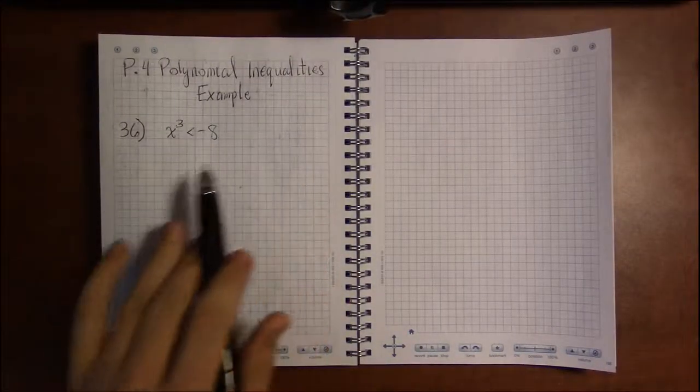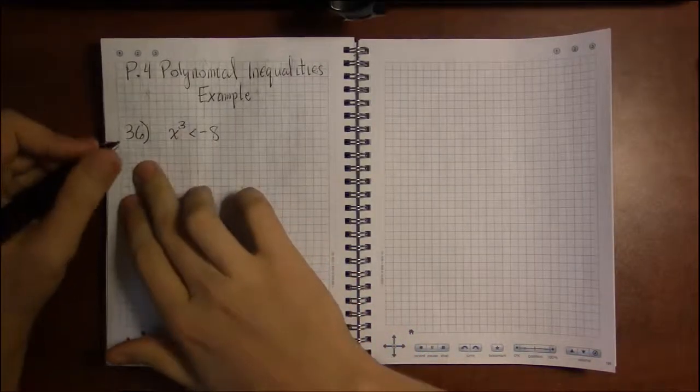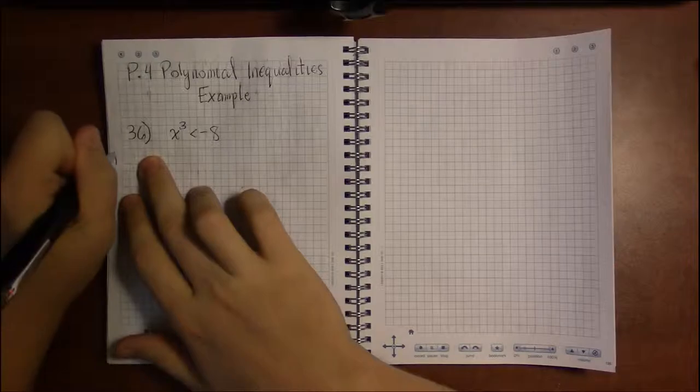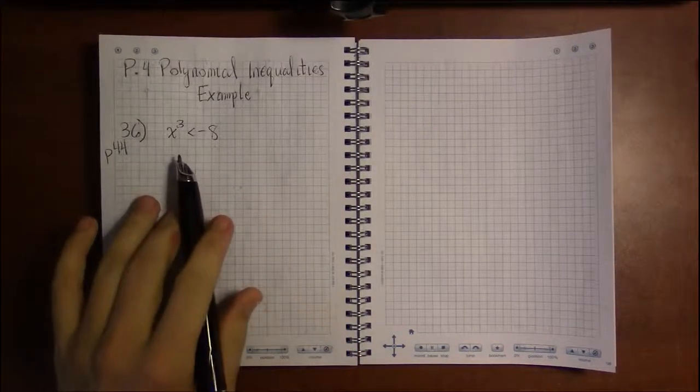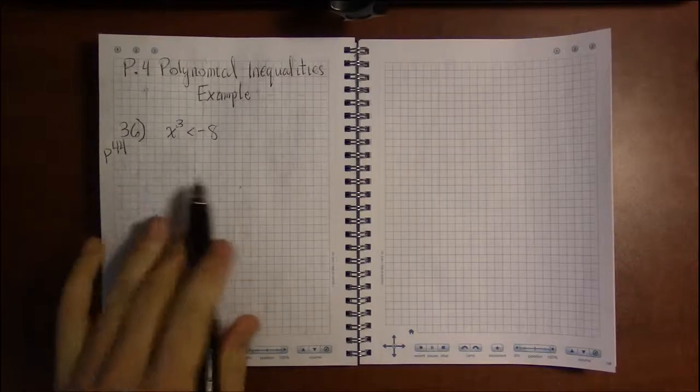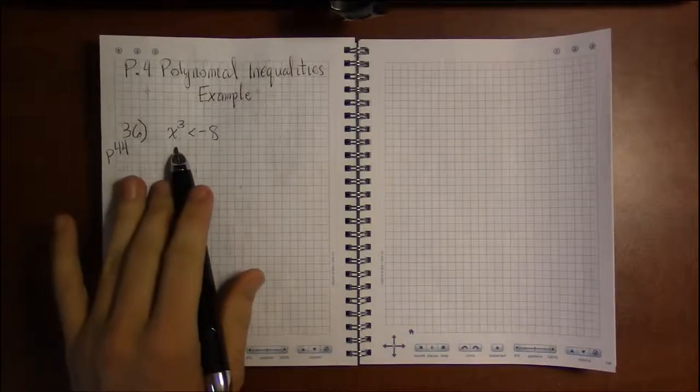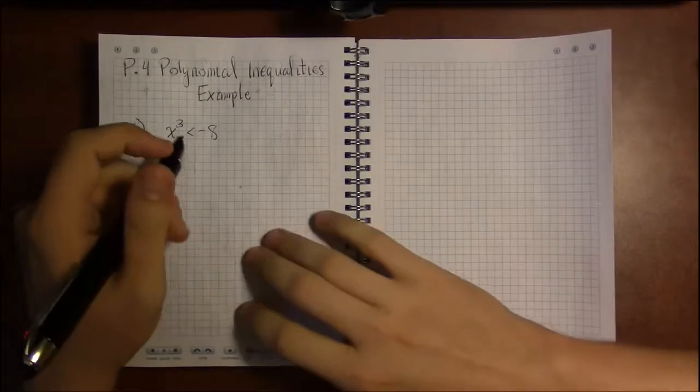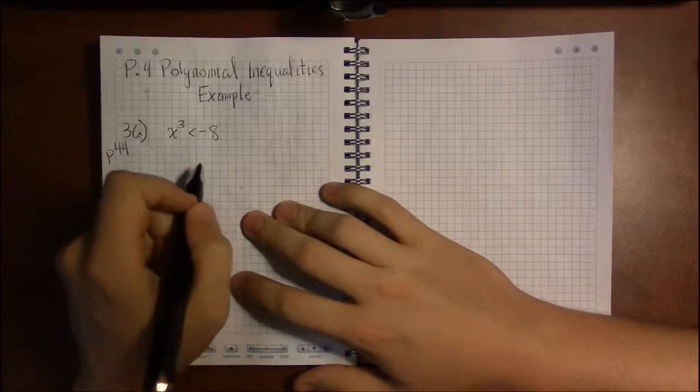All right, so our second example. We're in P4 looking at exercise 36 on page 44. This is going to be a little tricky because the factoring and the solving is going to be a little bit difficult. I'm going to kind of fly solo on these and you don't have to follow every detail of this example.